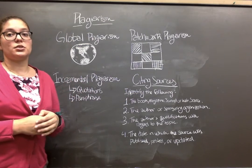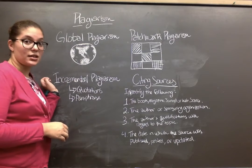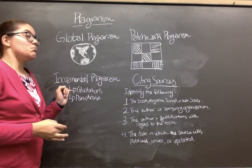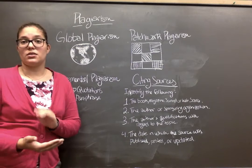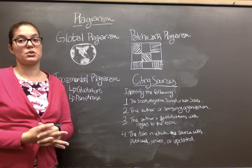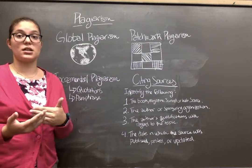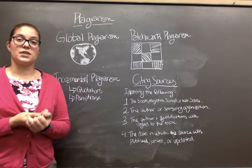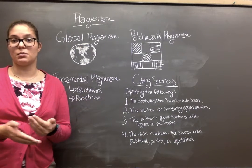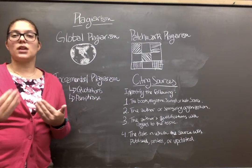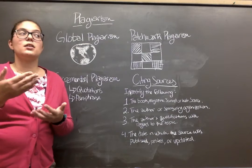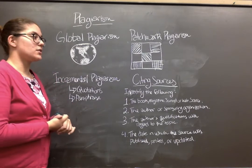The last type of plagiarism is the one that most students fall into accidentally. This is incremental plagiarism — giving a quote and failing to cite your source properly, or paraphrasing and failing to cite your source properly. Quotations are direct word-for-word what the other person has said, and paraphrasing is where you've taken what they've said and put it into your own words, but it's still not your original thought. It's somebody else's idea, so you still have to cite your sources.